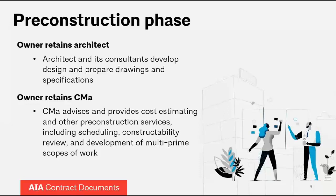During the pre-construction phase, the owner retains the architect, who retains other design professionals to help. The architect and its consultants develop the design and prepare drawings and specifications that will ultimately be used by the general contractor or trade contractors to build the project. The owner also retains the CM as advisor, who provides cost estimating, other pre-construction services, scheduling, constructability review, and development of multi-prime scopes of work if there are going to be multiple prime contractors on the project.